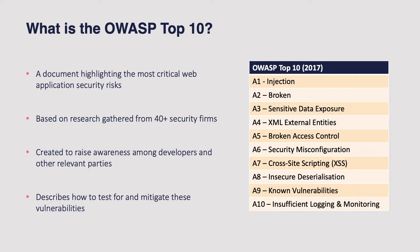The OWASP Top 10 is an awareness document — I don't like calling it a standard, though it's often thought of as one. This document is backed by data collected from a range of application security professionals and highlights the most critical web application security risks. The criticality of these risks is based on factors including how easy they are for a bad actor to detect, their exploitability, and the potential impact of their exploitation. The real purpose of the OWASP Top 10 was to focus the efforts of developers, IT managers, and anyone who works with web applications on the major threats, to reduce the success of attackers.